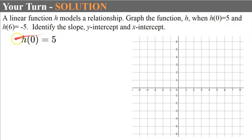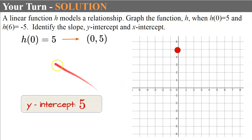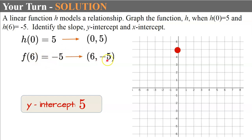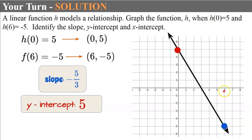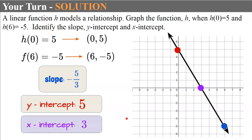Welcome back. h(0) equals 5 tells us that when x is 0, y is 5 — so our y-intercept is 5. We graph (0, 5). Then h(6) equals negative 5 means when x is 6, output is negative 5, giving us the point (6, negative 5). We graph our line and identify the slope: rise of negative 10 over run of 6 simplifies — or we can see rise 5 and run negative 3, giving slope negative five-thirds. Our line crosses the x-axis at 3, so our x-intercept is 3.